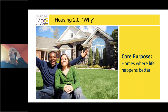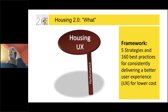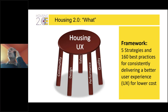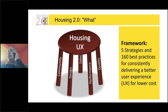This brings us to the why for Housing 2.0. Our core reason for existing is homes where life happens better. We start with high-performance home builders and build on the performance experience that programs already provide. We look at the whole housing experience as a system — performance, design, community, sales, and quality. These five strategies entail about 160 best practices that consistently deliver better user experience for lower cost.